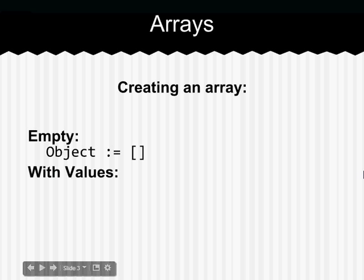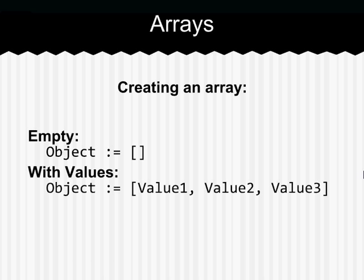You can also create an array with values. For example, value 1, followed by a comma, value 2, a comma, and value 3, all between the square brackets. These values can be anything.